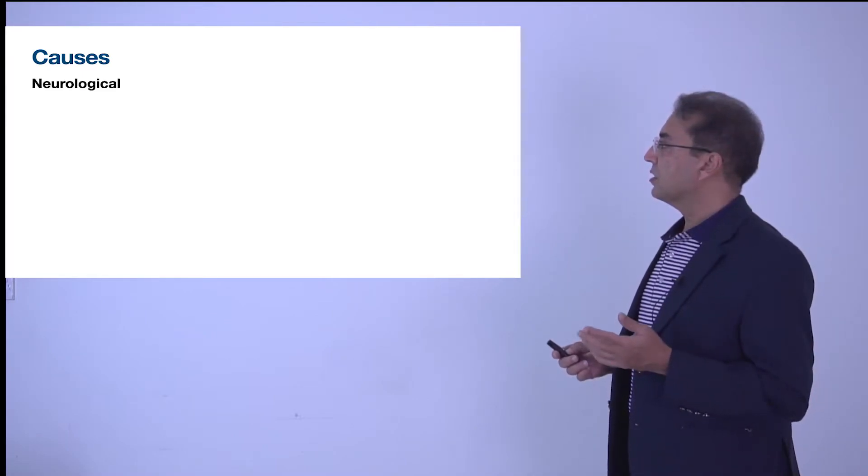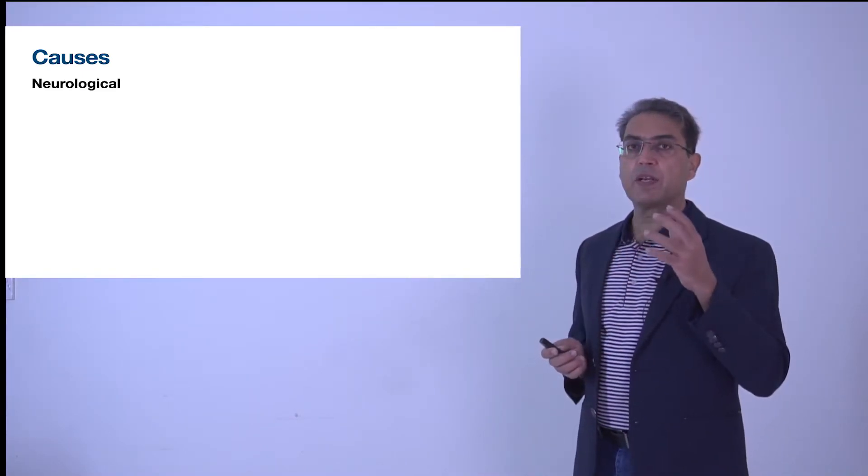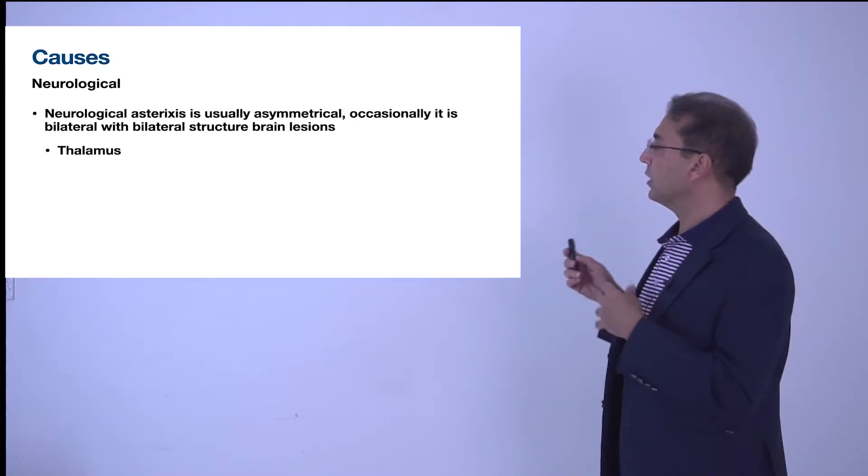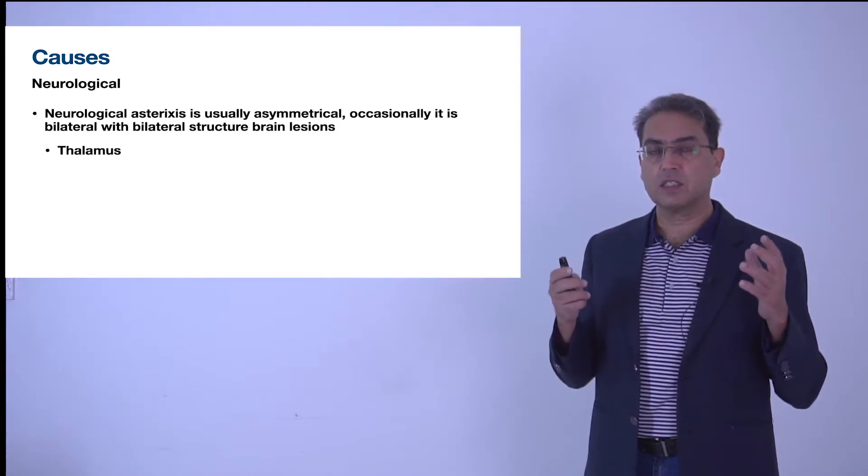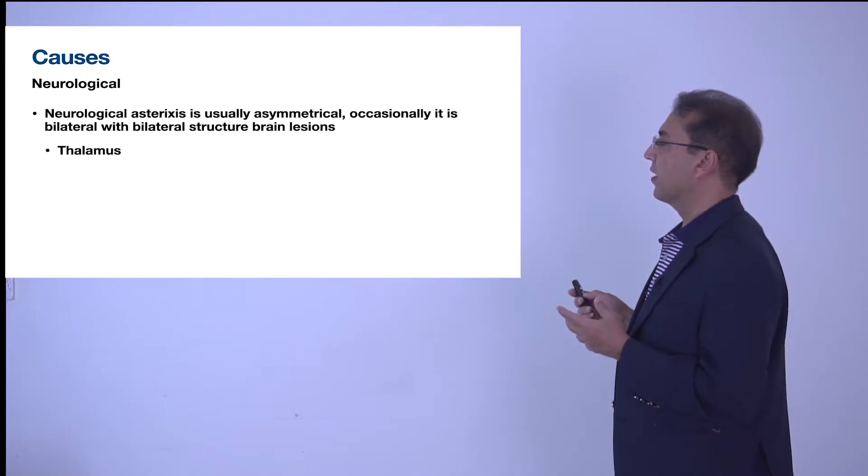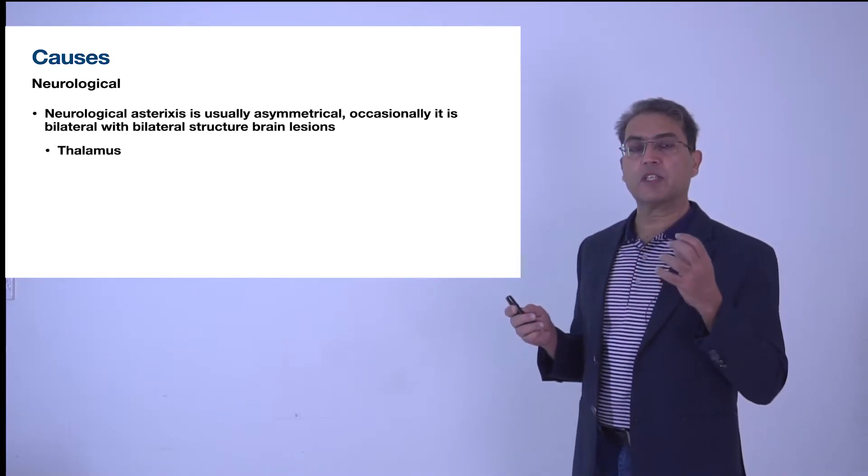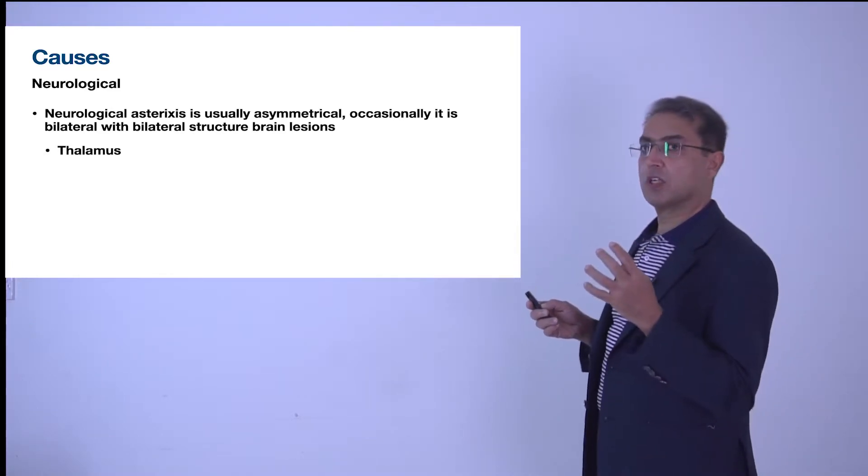Neurological conditions usually characterize the flapping tremor on one side. This is usually asymmetrical, but if there is diffuse brain damage affecting both sides of the brain, you can have bilateral flapping tremor. Usually if it is unilateral it is neurological, and if it is bilateral it may be non-neurological.